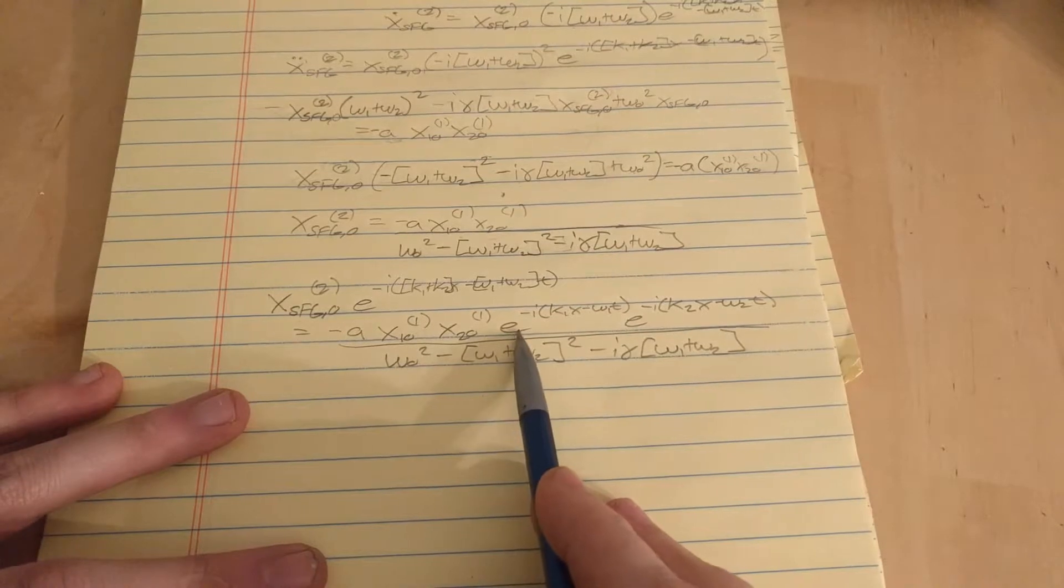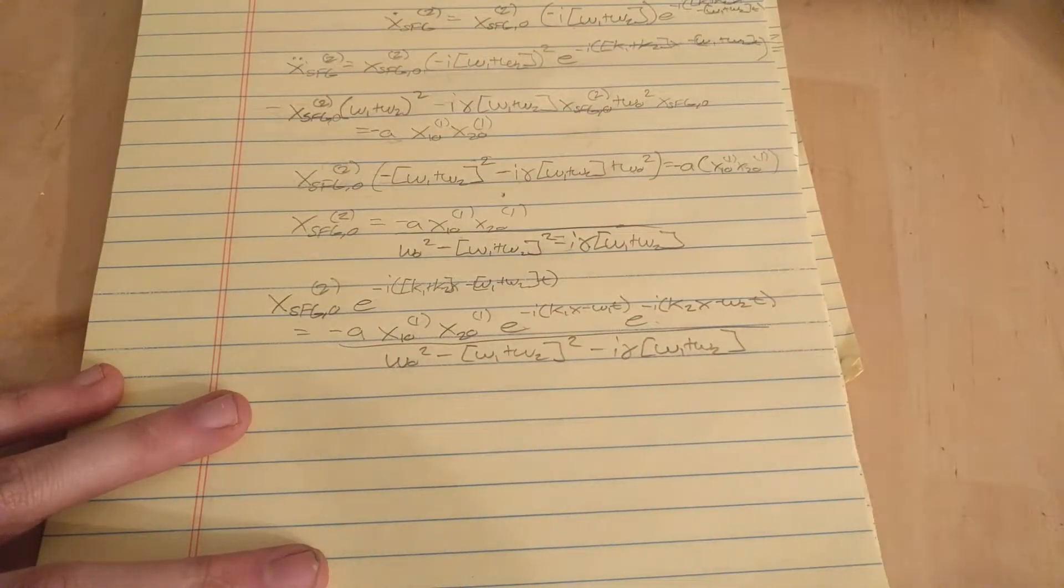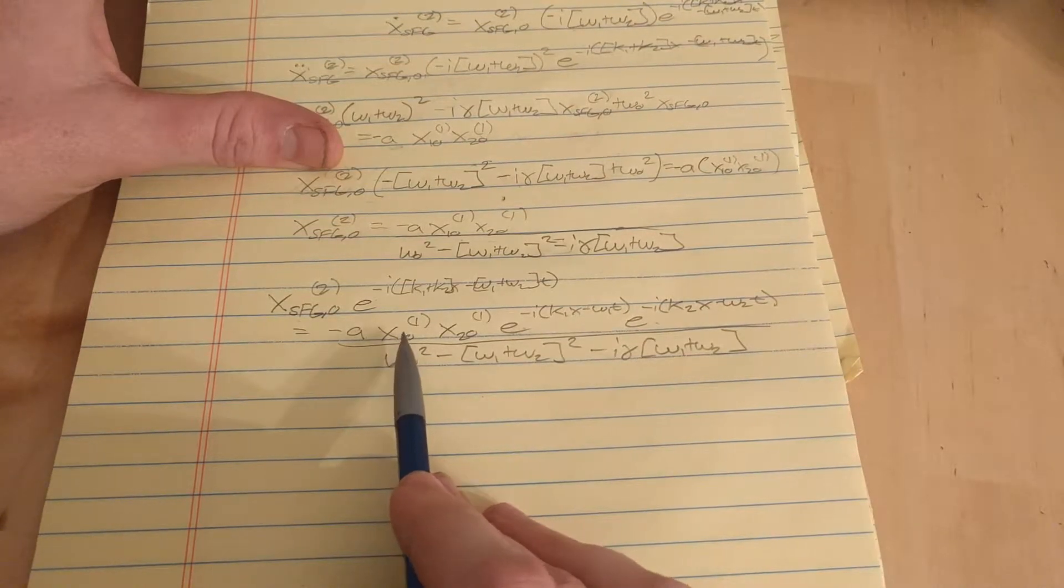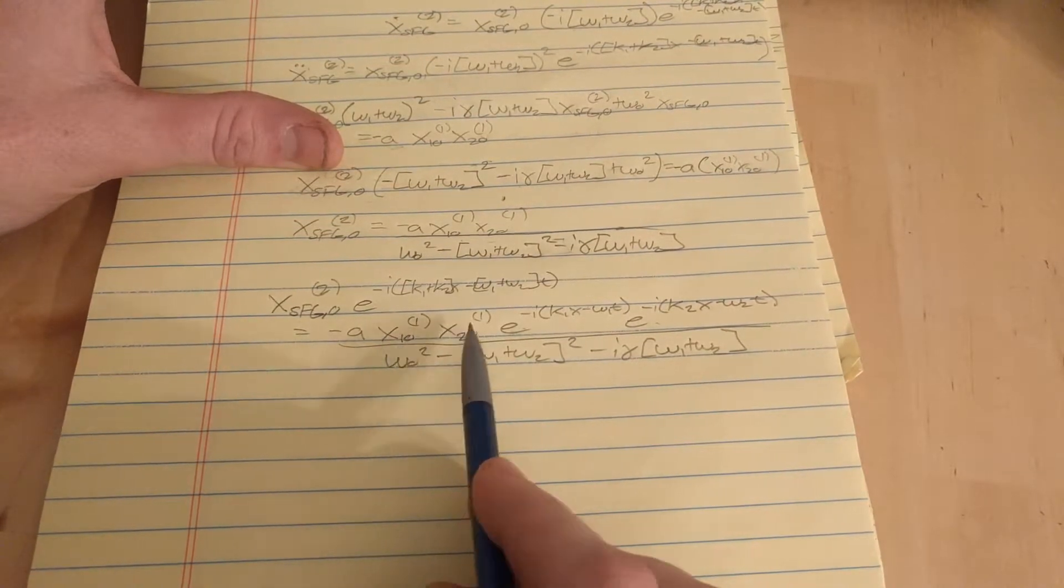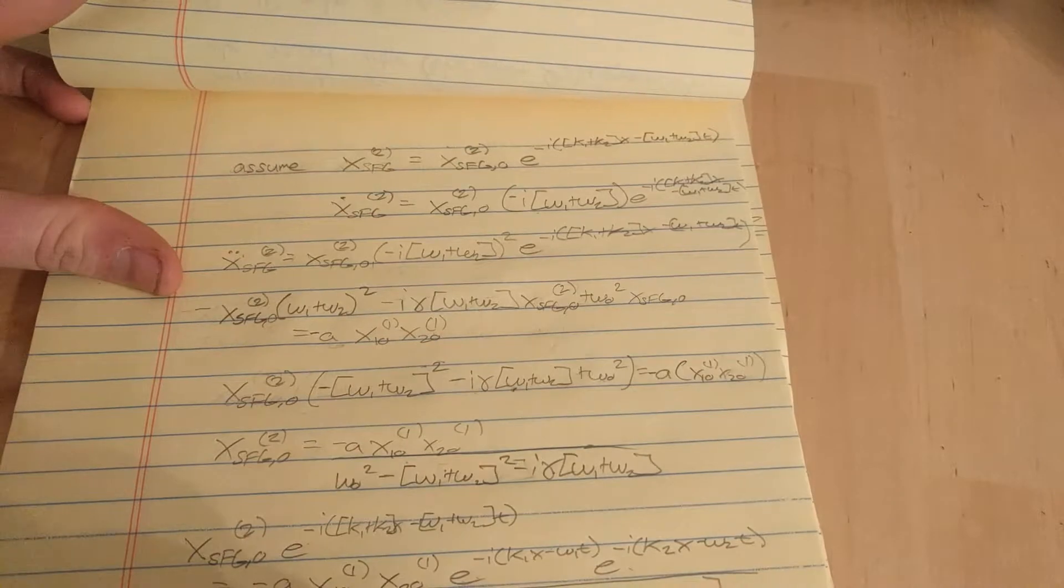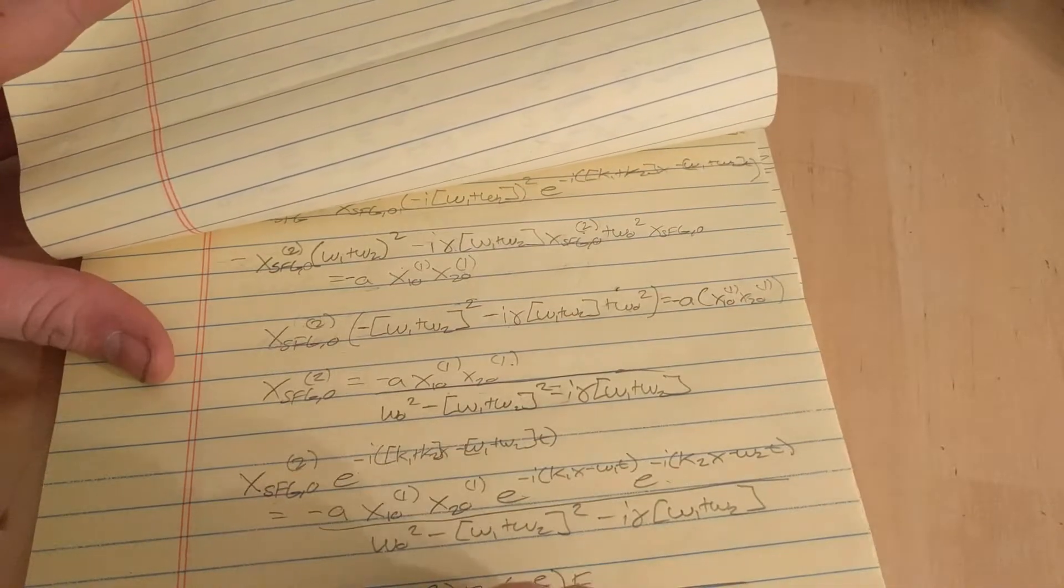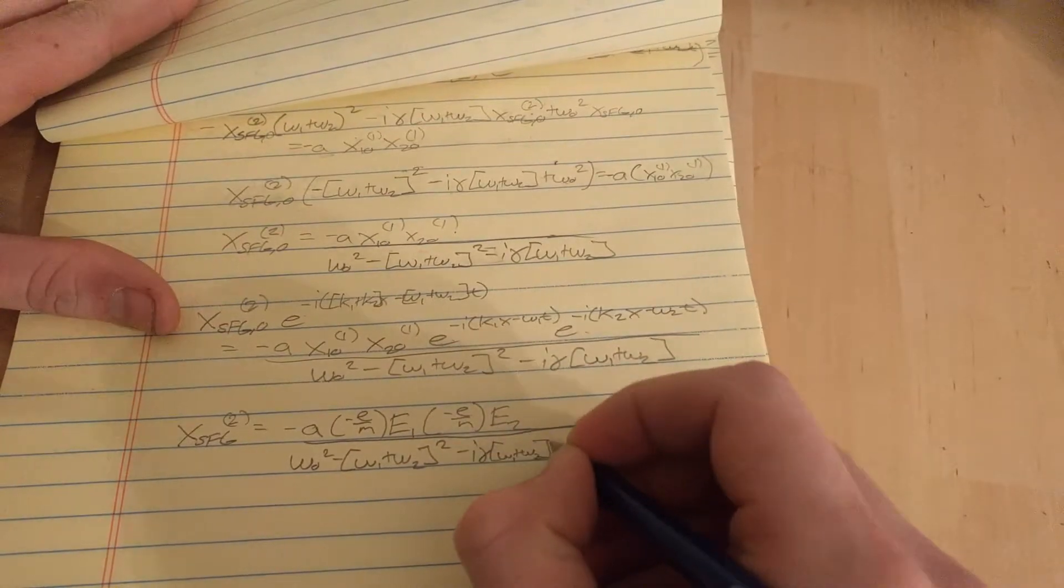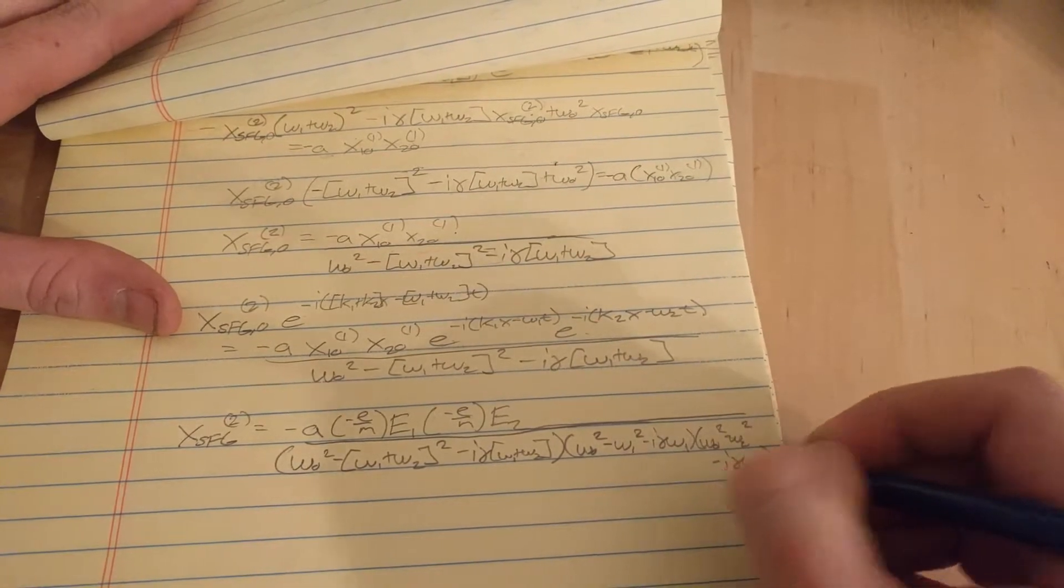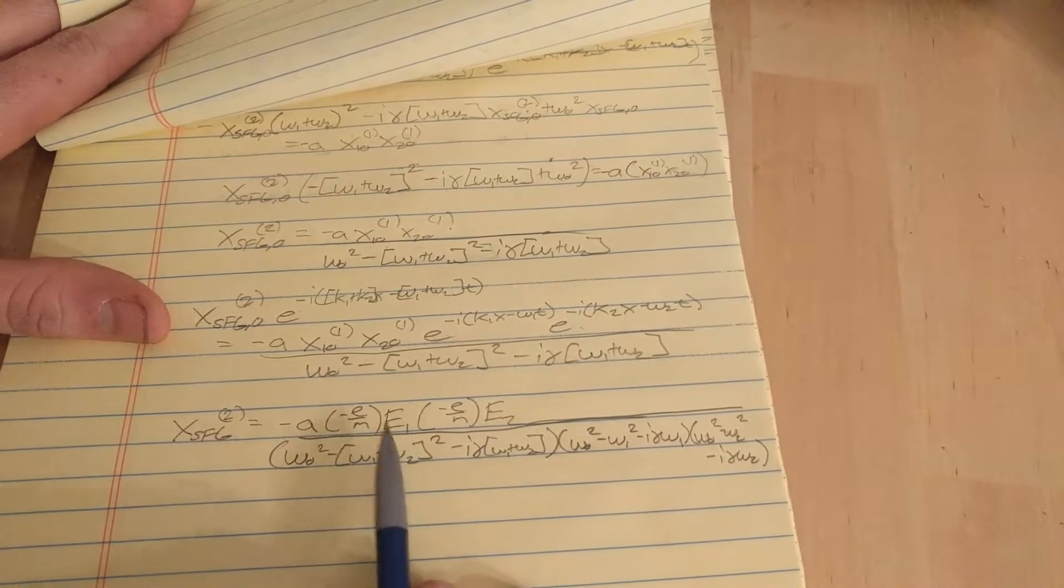That's all I'm doing. Notice that you can rewrite this product of exponentials as this, so they can cancel each other. Now I'm going to go back to my notes from the previous video and I'm going to plug in for X1 knot and X2 knot here.